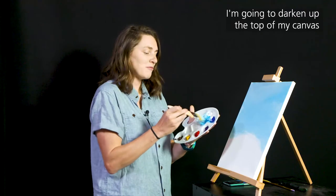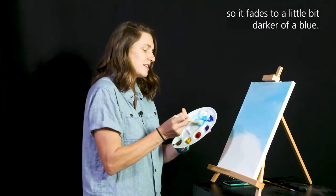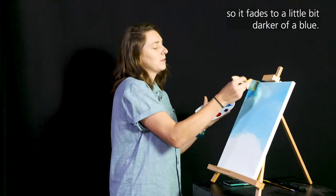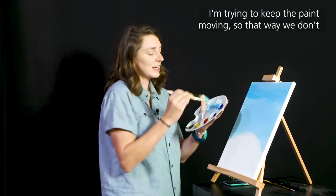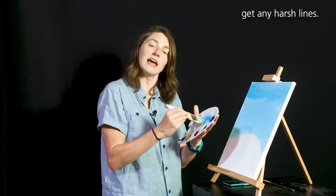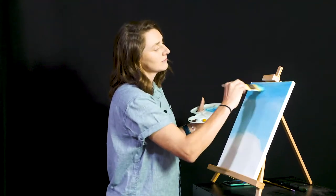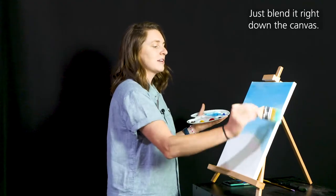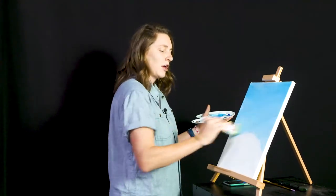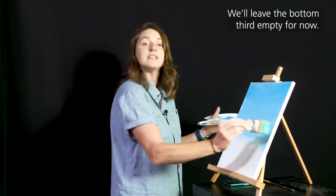I'm going to darken up the top of my canvas so it fades to a little bit darker blue. Trying to keep the paint moving so that way we don't get any harsh lines. Just blend it right down the canvas. We'll leave the bottom third empty for now.